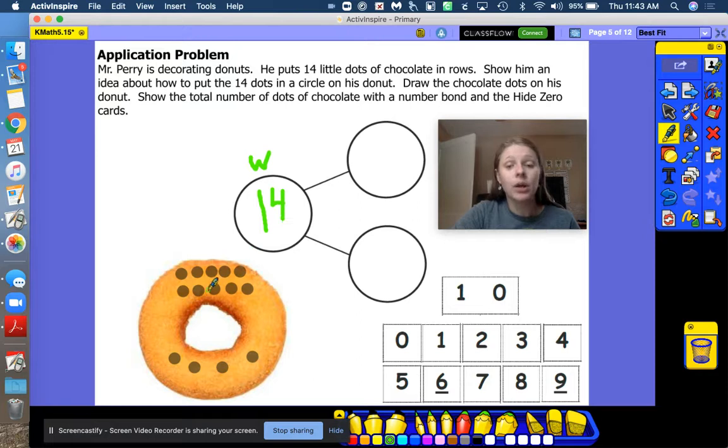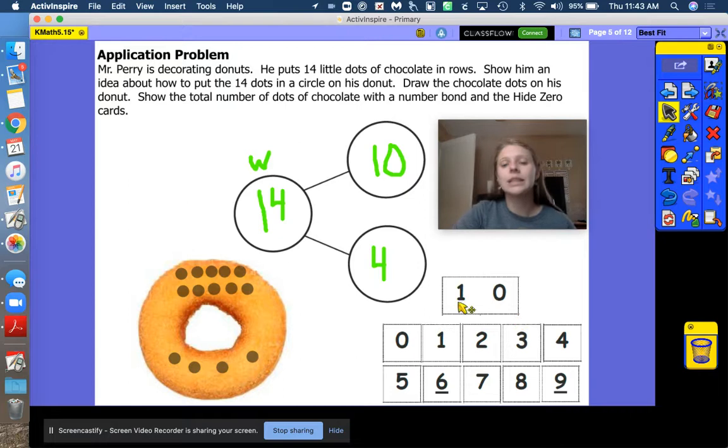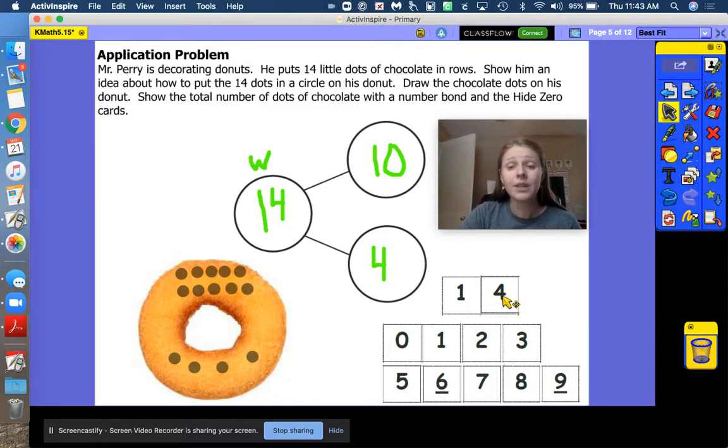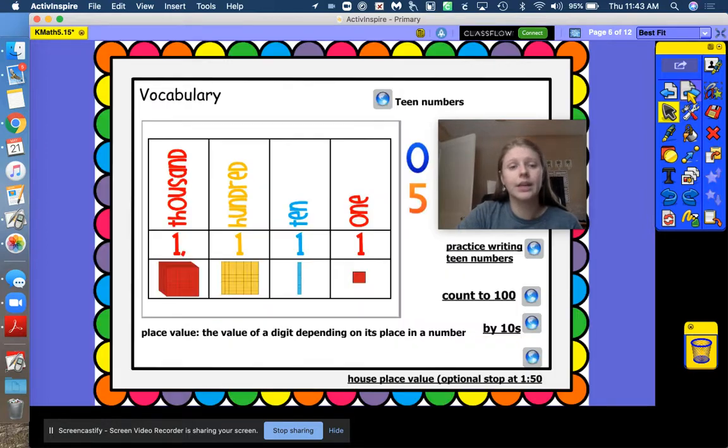How many chocolate chips are on top? Ten. How many chocolate chips are on the bottom? Four. Great job, friends. Now I'm going to represent fourteen down here with our hide zero cards by dragging up the four and covering over the zero that is within our ten ones. Our one inside of fourteen. Great job.